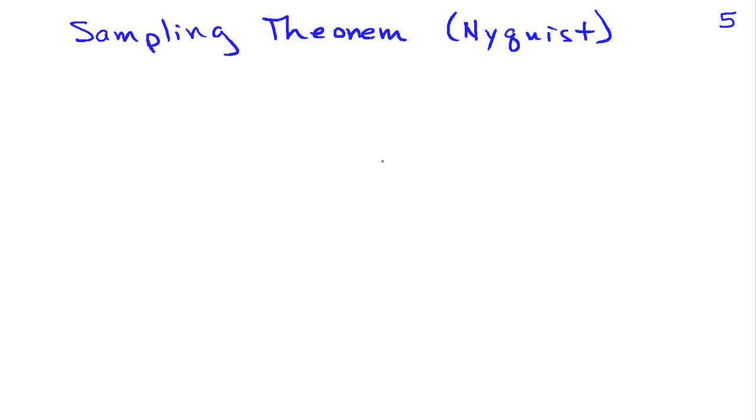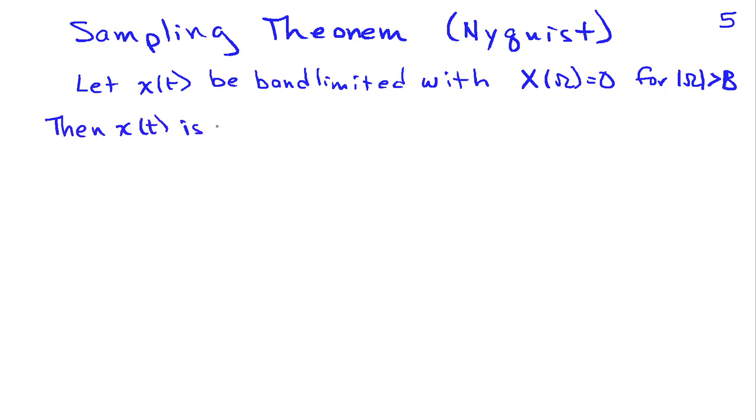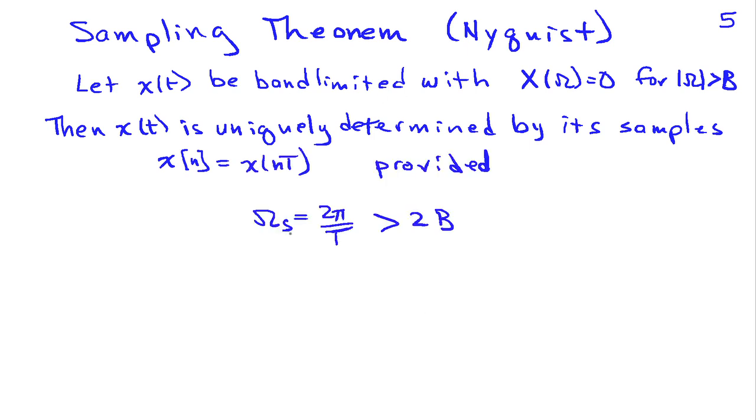And the sampling theorem says that if x(t) is band-limited with zero energy above frequency B, then x(t) is uniquely determined by its samples x[n] equals x(nT), provided that the sampling frequency, ωs, which is 2π/T exceeds twice the bandwidth. We have some terms here. The frequency ω equals B is called the Nyquist frequency, and the frequency ω equals 2B is called the Nyquist rate, because that's the minimum rate at which we can sample a signal and still satisfy the sampling theorem.